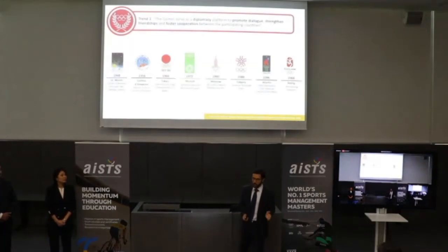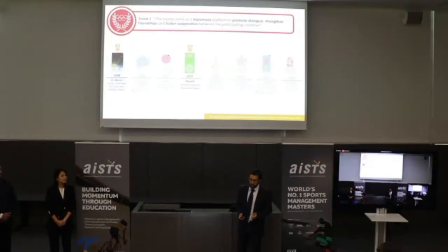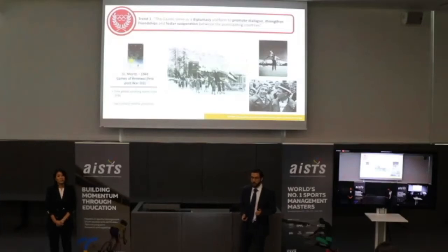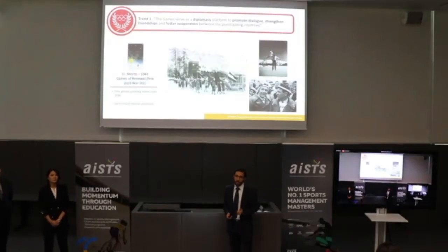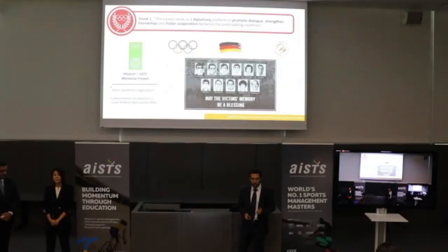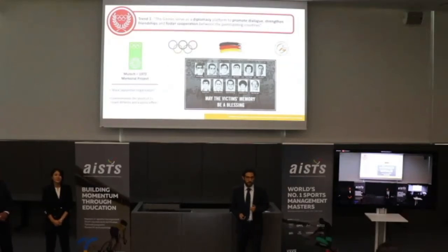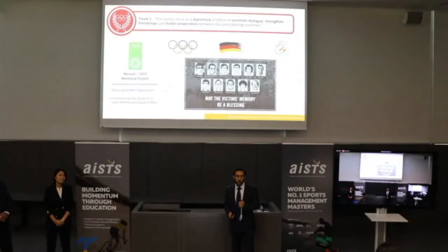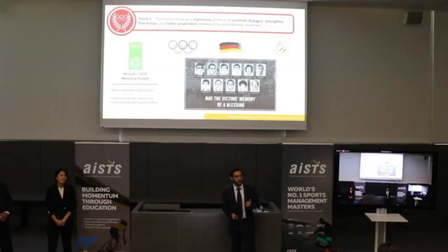This trend covers editions from St. Moritz to Beijing, but we focus on St. Moritz and Munich as best representing diplomacy and cooperation. St. Moritz was the renewal of the Olympic Games after World War II — the first global sport event since 1936. The IOC picked Switzerland because of their neutral position. Then in Munich 1972, the Black September organization conducted a terrorist attack against 11 Israeli athletes and one German police officer. To commemorate this, the IOC, the German government, and the Foundation for Global Sport Development decided to build a memorial for the victims.